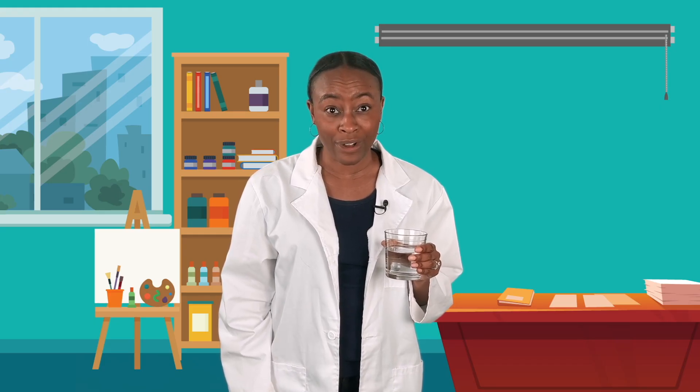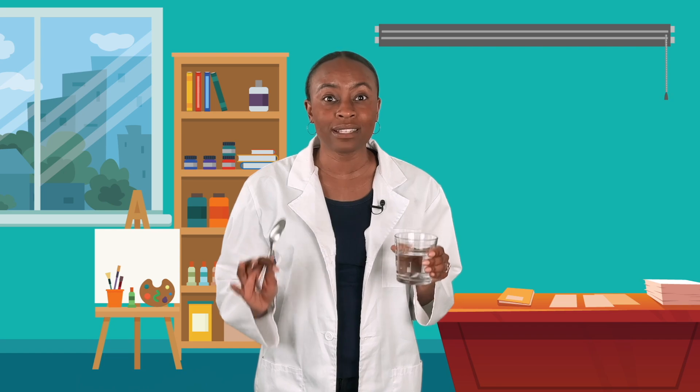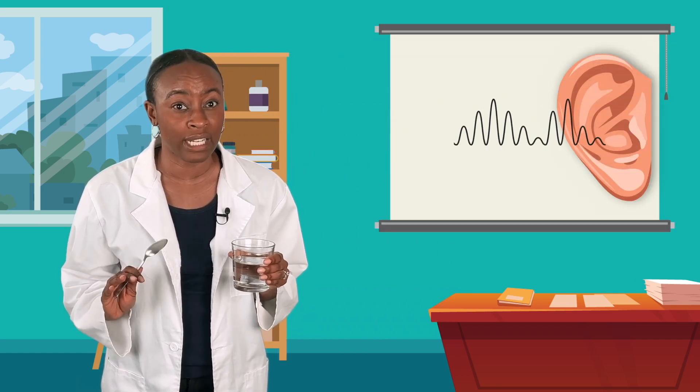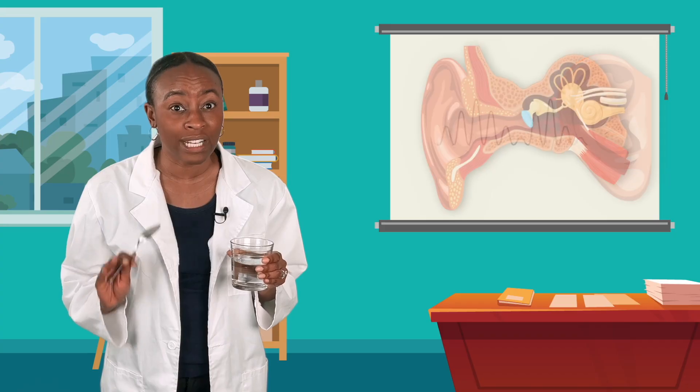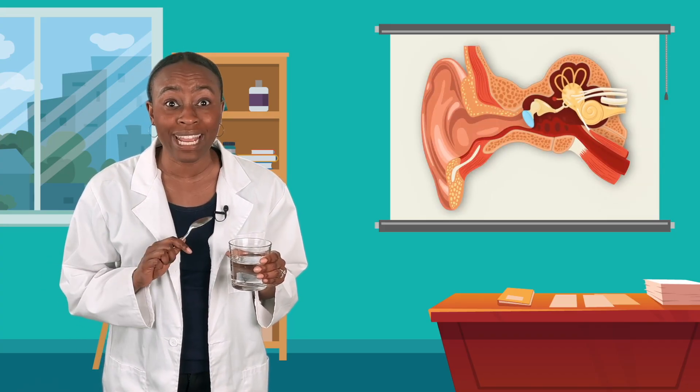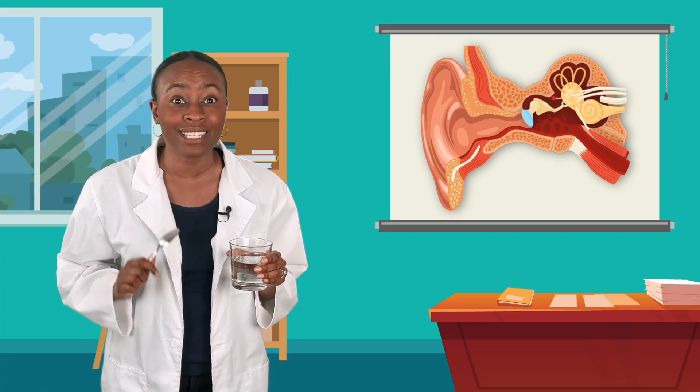When the glass vibrates, it shakes the water and the air around it. The vibrations travel through the air like tiny waves — those are called sound waves. The sound waves travel through the air all the way to our ears. And when those waves reach our ears, small parts in our ears vibrate, too. Then a signal is sent to our brain that lets us hear the sound.